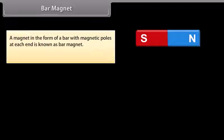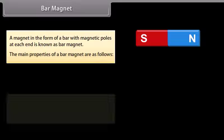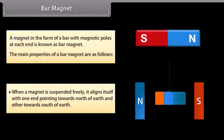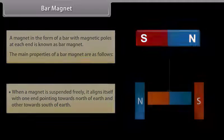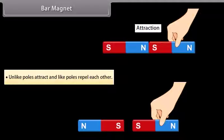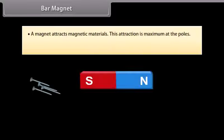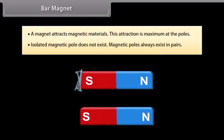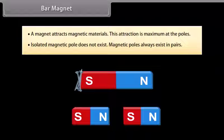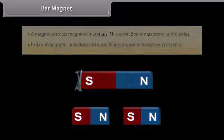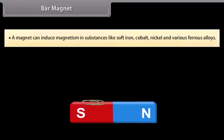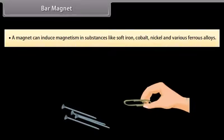A magnet in the form of a bar with magnetic poles at each end is known as a bar magnet. The main properties of a bar magnet are as follows: When a magnet is suspended freely, it aligns itself with one end pointing towards the north of the Earth and the other towards the south. Unlike poles attract and like poles repel each other. A magnet attracts magnetic materials, and this attraction is maximum at the poles. Isolated magnetic poles do not exist; magnetic poles always exist in pairs. A magnet can induce magnetism in substances like soft iron, cobalt, nickel, and various ferrous alloys.